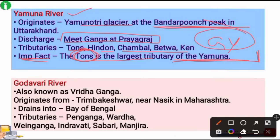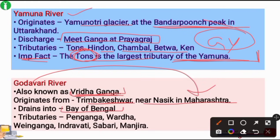The next river is the Godavari River, which is called the 'Old Ganga.' It originates at Trimbakeshwar, near Nasik in Maharashtra, and finally drains into the Bay of Bengal.